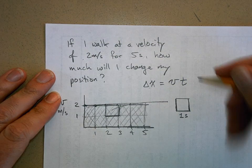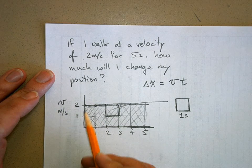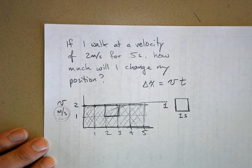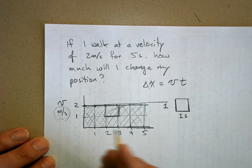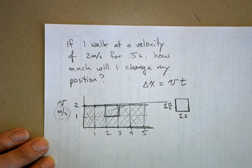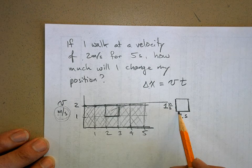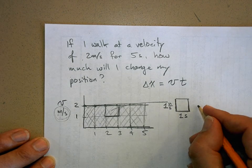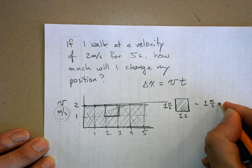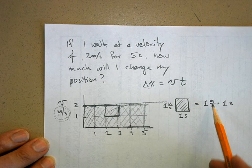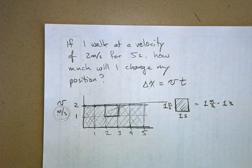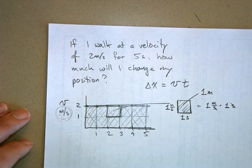The height of that square is 1 meter per second, since the vertical axis represents velocity. To find the area of the square — width times height — it's 1 meter per second times 1 second. What's a meter per second times a second? It's a meter. So 1 times 1 equals 1: this represents 1 meter of displacement. Each square underneath the graph represents 1 meter of displacement.